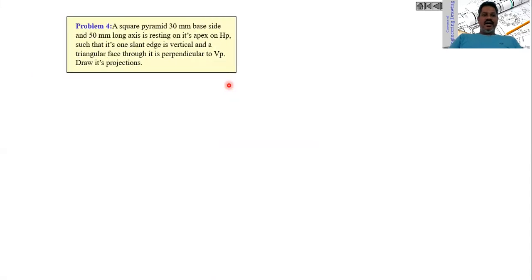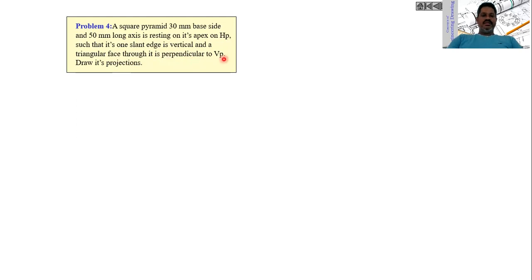Now let me take an example. A square pyramid of 30 mm base side and 50 mm long axis is resting on its apex on HP. Its apex is lying on HP such that one slant edge is vertical and a triangular face through it is perpendicular to VP. Draw its projections.